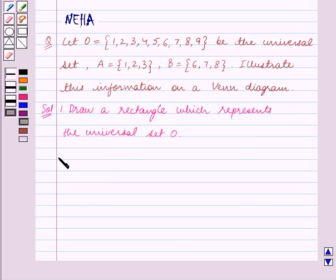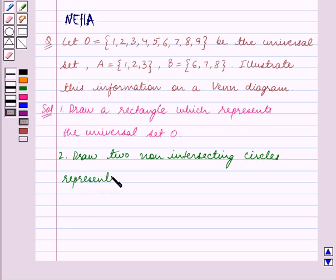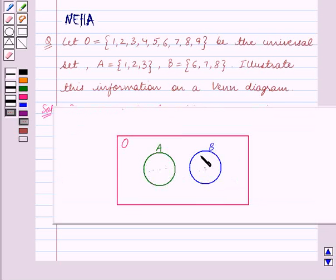The second step is: Draw two non-intersecting circles representing the sets A and B. So we have drawn these two circles which represent the sets A and B. We can see that the sets A and B have no common elements, so they are disjoint sets. Hence these two circles are non-intersecting.